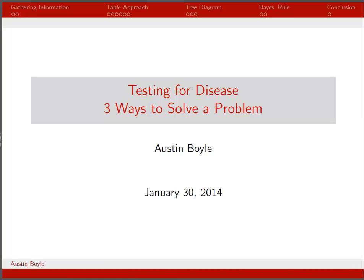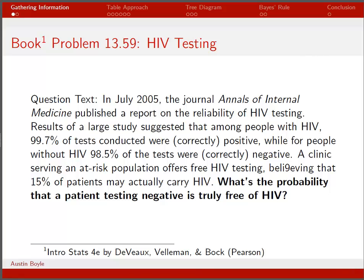Hey, everybody. Today we are going to talk about testing for disease and three separate ways to solve a problem. We covered this problem in the textbook on homework number two. You can read the question text from problem 13.59. The question we're really trying to answer is this last sentence in bold: what's the probability that a patient testing negative is truly free of HIV?